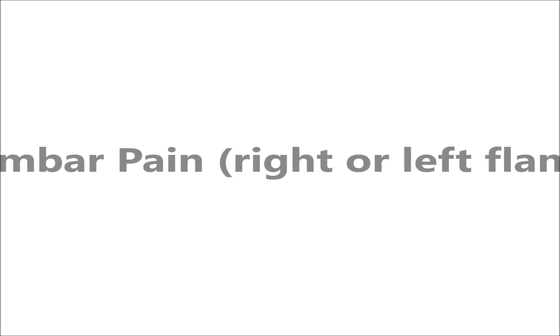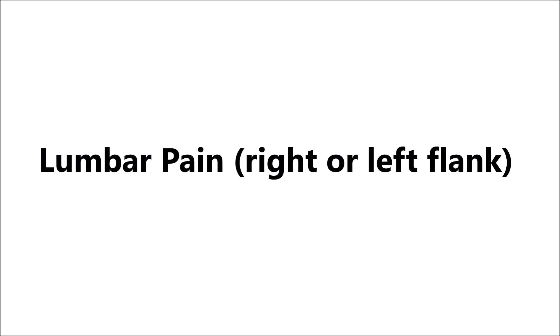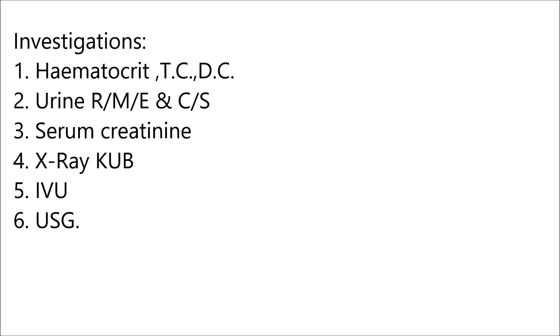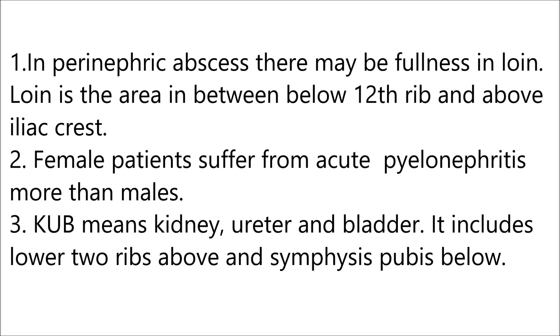If the patient comes with lower lumbar pain — right or left flank — ask for the history of onset, severity, duration, and nature of pain, radiation or shifting of pain, fever, burning micturition, and frequency of urination. What is the color of urine — is it clear or high-colored? Look for temperature, pulse, blood pressure, any swelling or scar marks, any lump and tenderness, and whether the renal angle is tender. Investigations: hematocrit, TC, DC, urine routine microscopic examination and culture, serum creatinine, X-ray KUB (kidney, ureter, and bladder), IVU, and ultrasound.